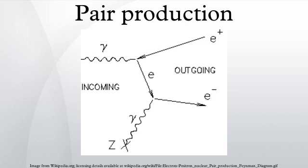Pair production is the creation of an elementary particle and its antiparticle, for example creating an electron and positron, a muon and antimuon, or a proton and antiproton.